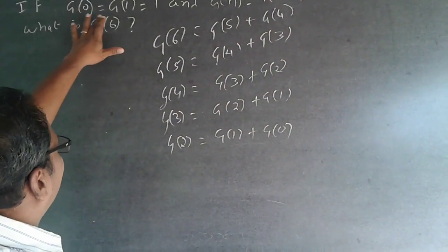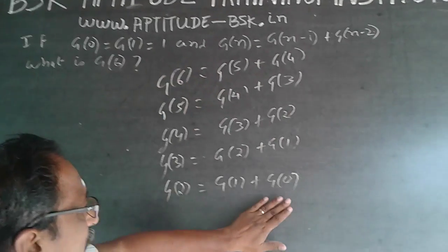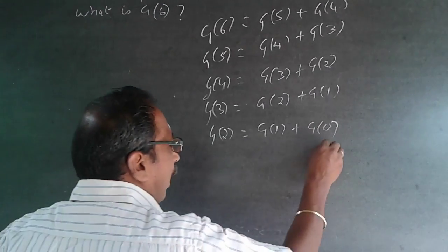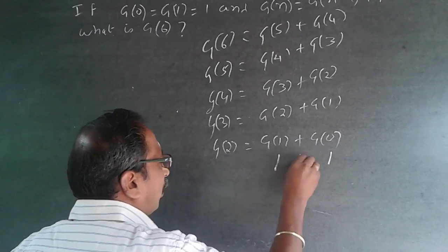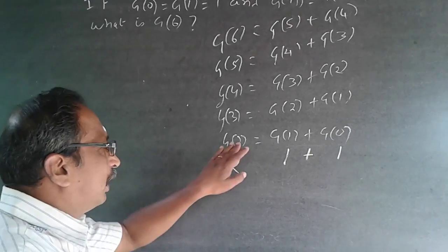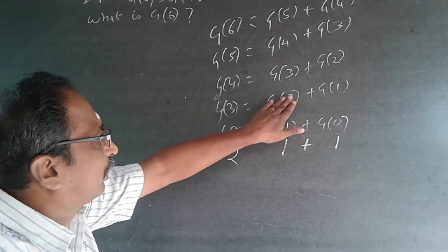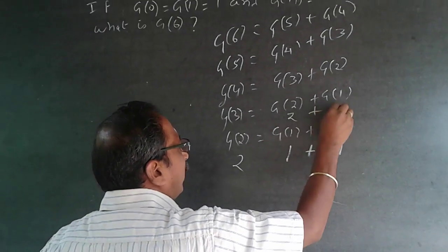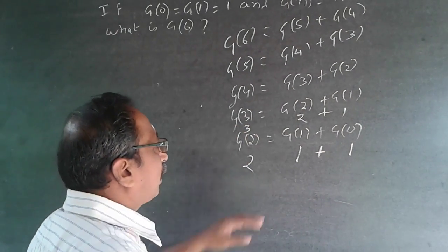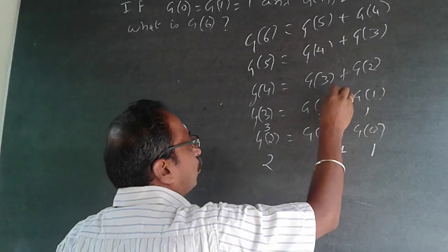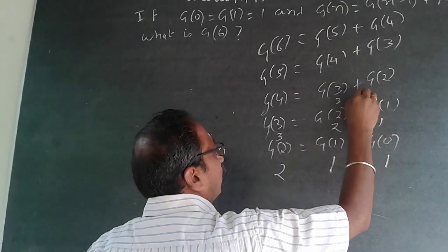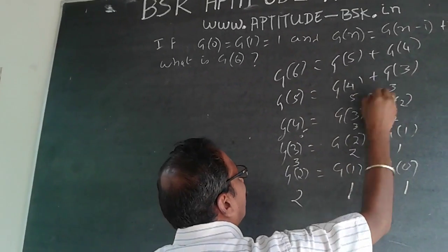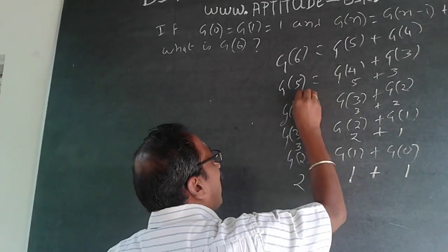g of 3 will be equal to g of 2 plus g of 1 plus g of 0. It has been given that g of 0 is equal to g of 1 is equal to 1. So 1 plus 1 will be 2, so g of 2 is 2. Now that you know g of 2 and g of 1, g of 3 will be 2 plus 1 equals 3. Then g of 4 is 3 plus 2 equals 5.